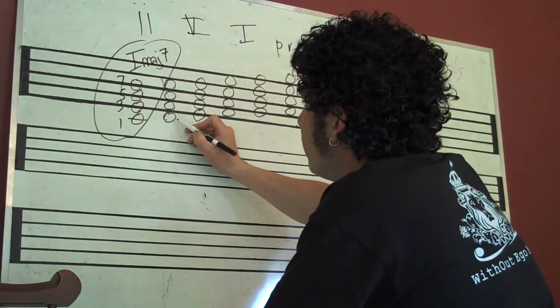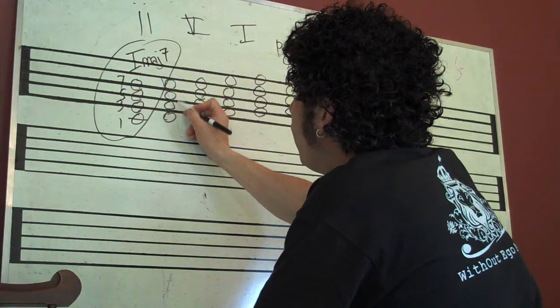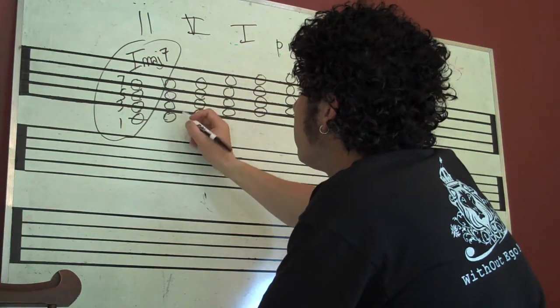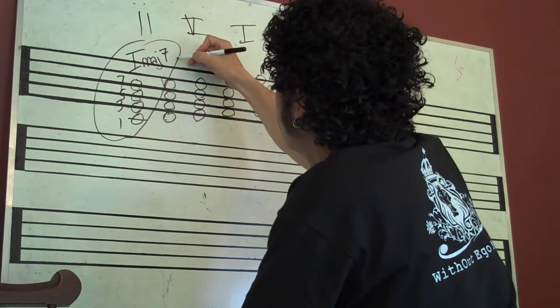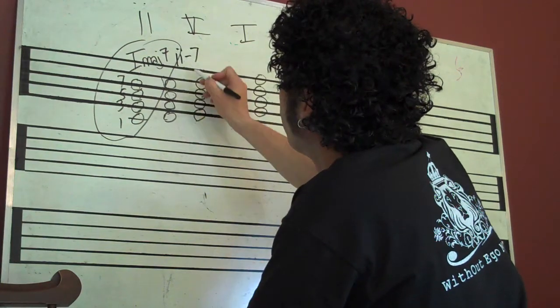So then this chord, this is a D minor seven, because you've got D, F, A, and C. So this is our two minor seven chord right here.